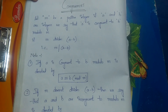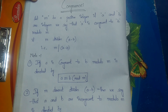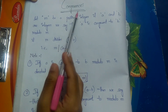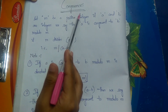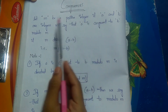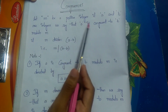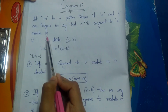Let's look into another new topic: congruences. This is very important for one-mark questions. Let m be a positive integer. If a and b are integers, how do we say that a is congruent to b modulo m?